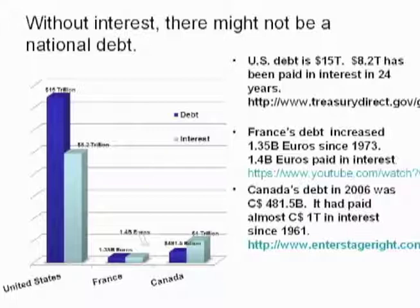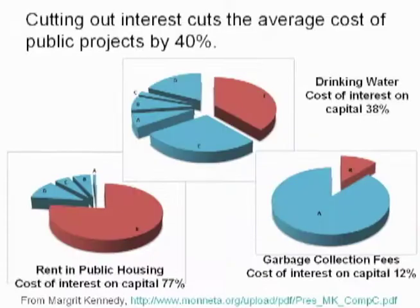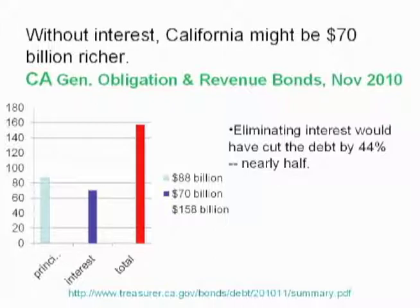Japan borrows from its own central bank, which is why it can maintain its status as a major exporter. They're doing quite well despite having the worst debt-to-GDP ratio among major countries, because they owe the debt to themselves. Margaret Kennedy found that cutting out interest cuts the average cost of public projects by 40% — 12% for garbage, 77% for public housing. In California, in 2010, general obligation and revenue bonds outstanding were $158 billion, of which $70 billion was interest — that's 44%. If California had been borrowing from its own state bank, we would be $70 billion richer.